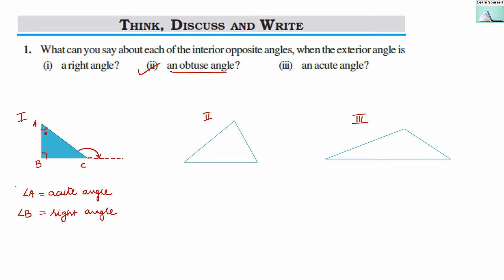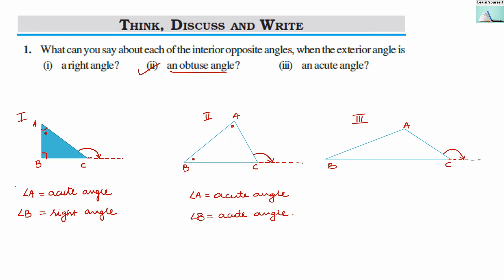In possibility 2, if the exterior angle is obtuse, the interior opposite angles A and B can both be acute angles — for example, 60 degrees and 60 degrees. In possibility 3, in triangle ABC, if the exterior angle is obtuse, angle A can be an obtuse angle and angle B can be an acute angle.